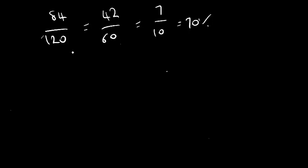We've got quite a difficult number on the bottom of a fraction, so we simplify the fraction until we can recognize the percent. Divide top and bottom by 2 to get 42 out of 60. Divide by 6 to get 7 tenths, which is 70 percent.